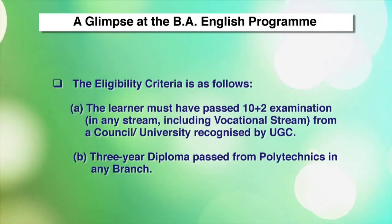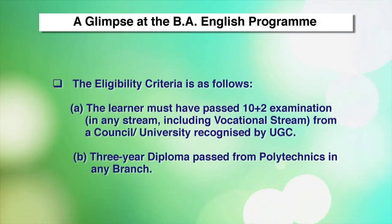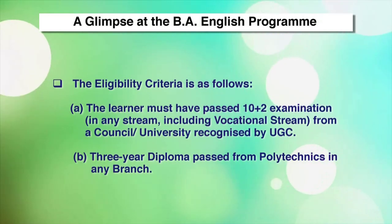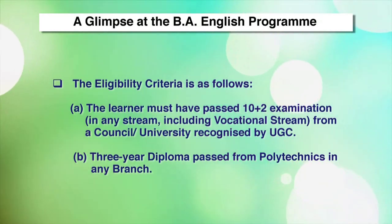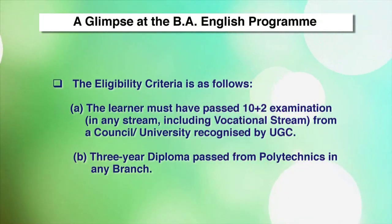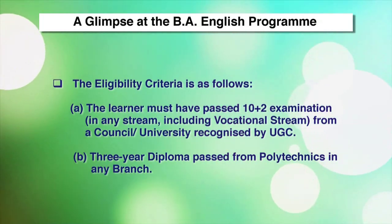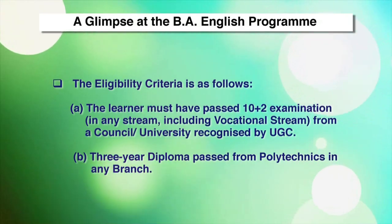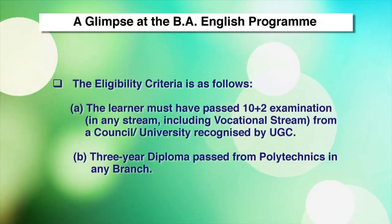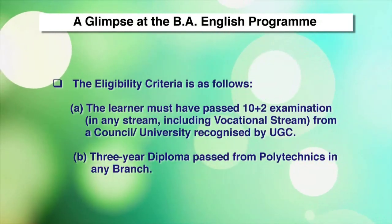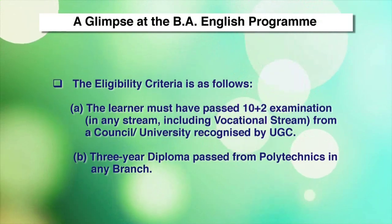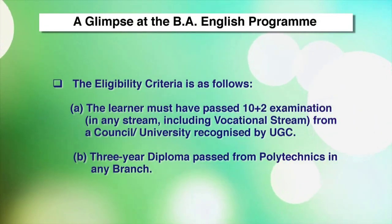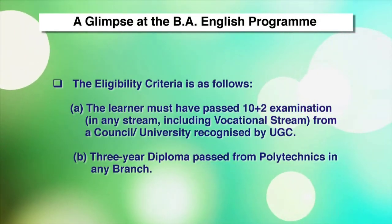Now, the eligibility criteria is as follows. The learner must have passed a 10+2 examination in any stream, including vocational stream, from a council or university recognized by UGC. Or, the learner must have passed a three-year diploma from polytechnics in any branch.